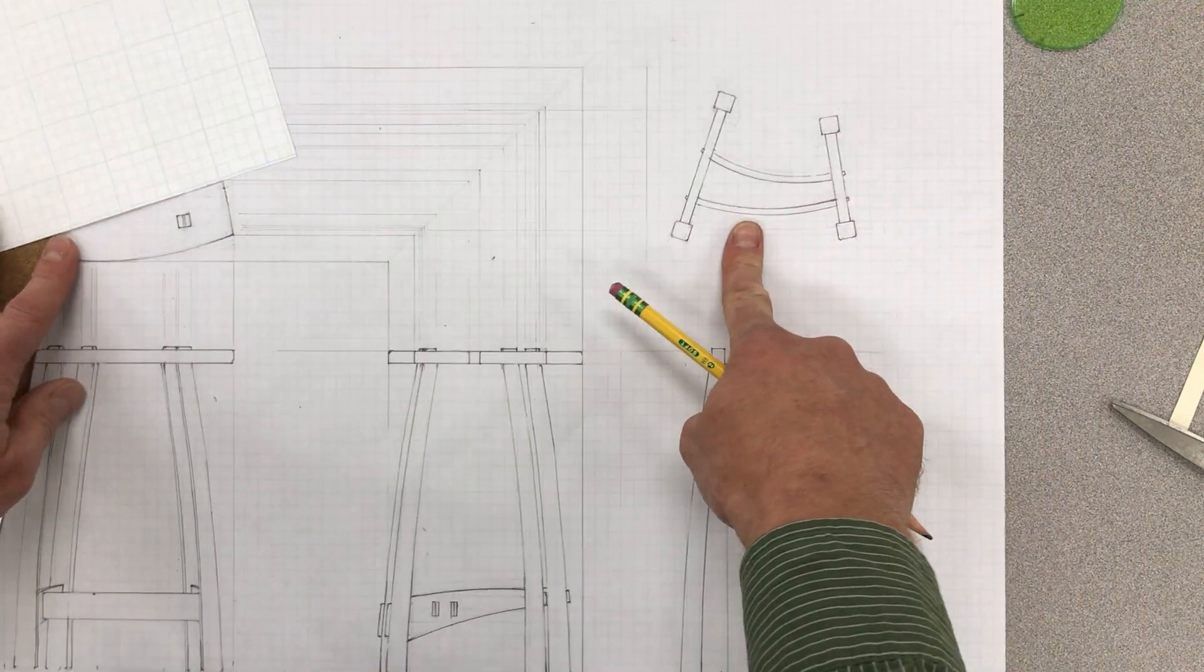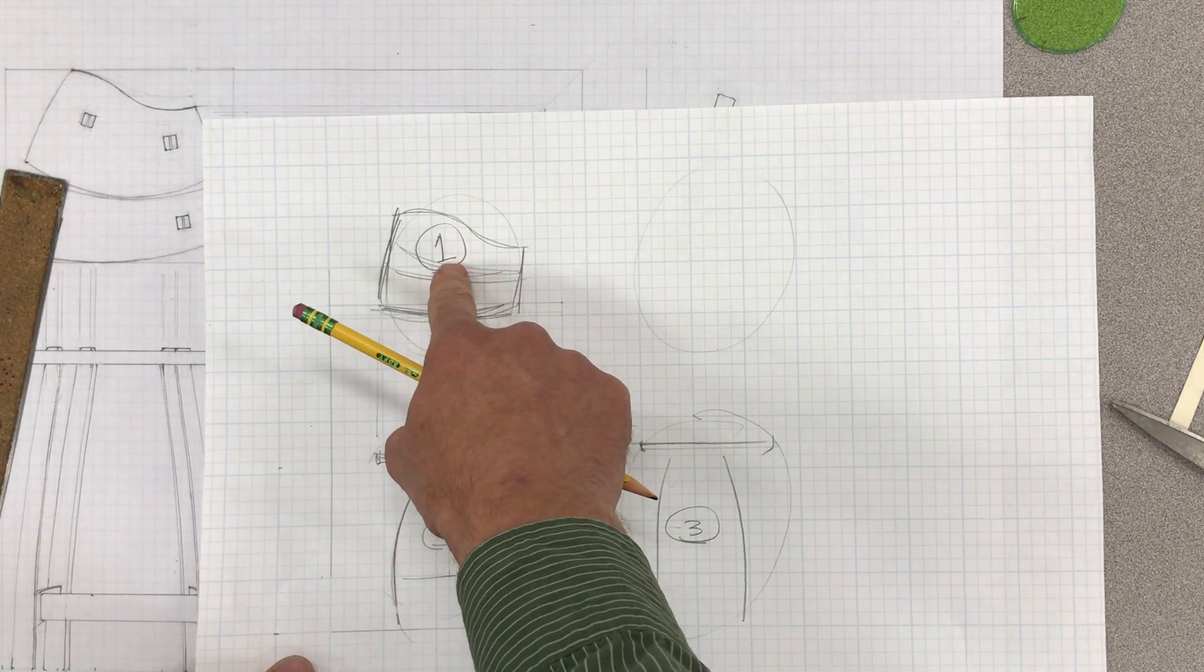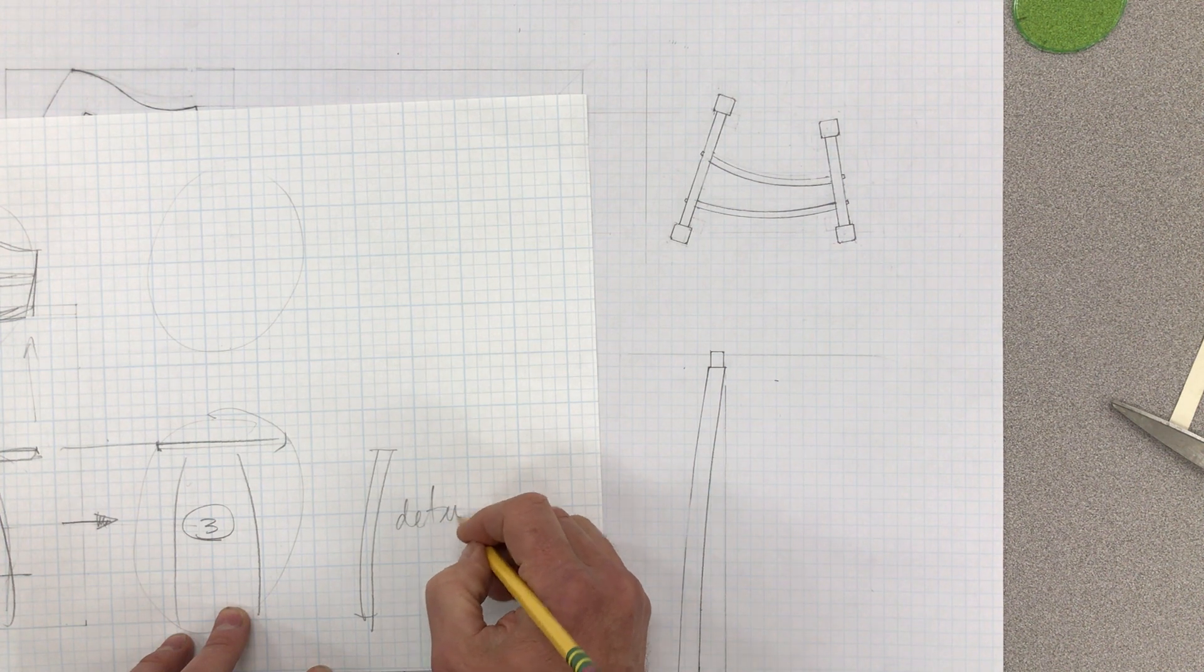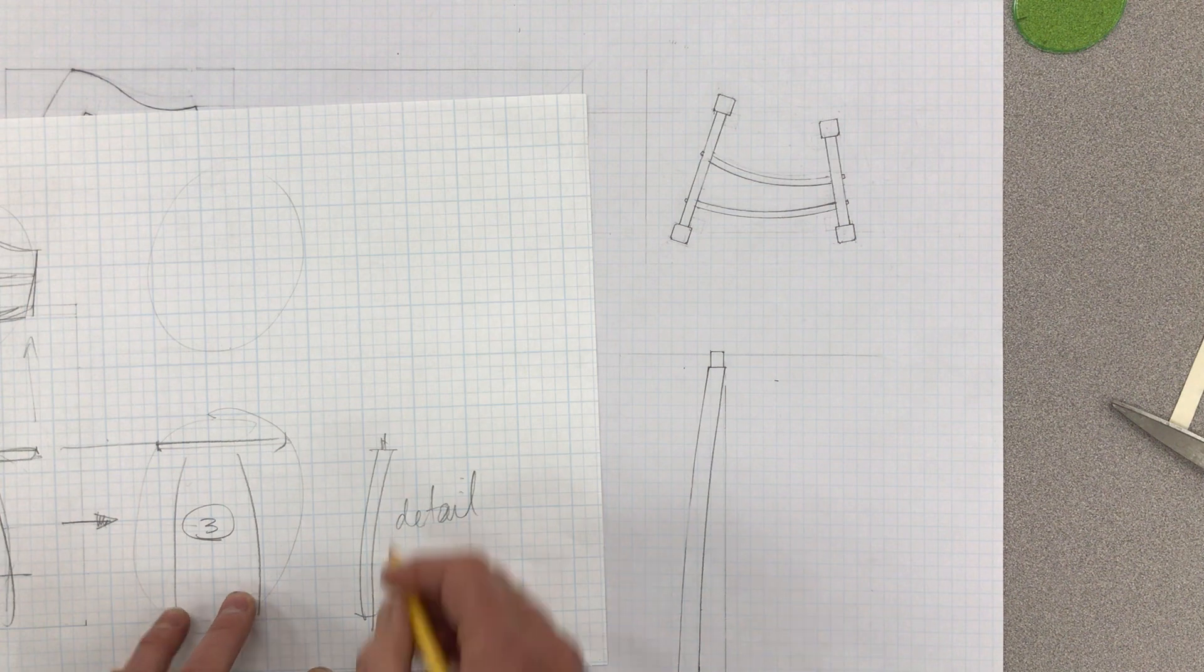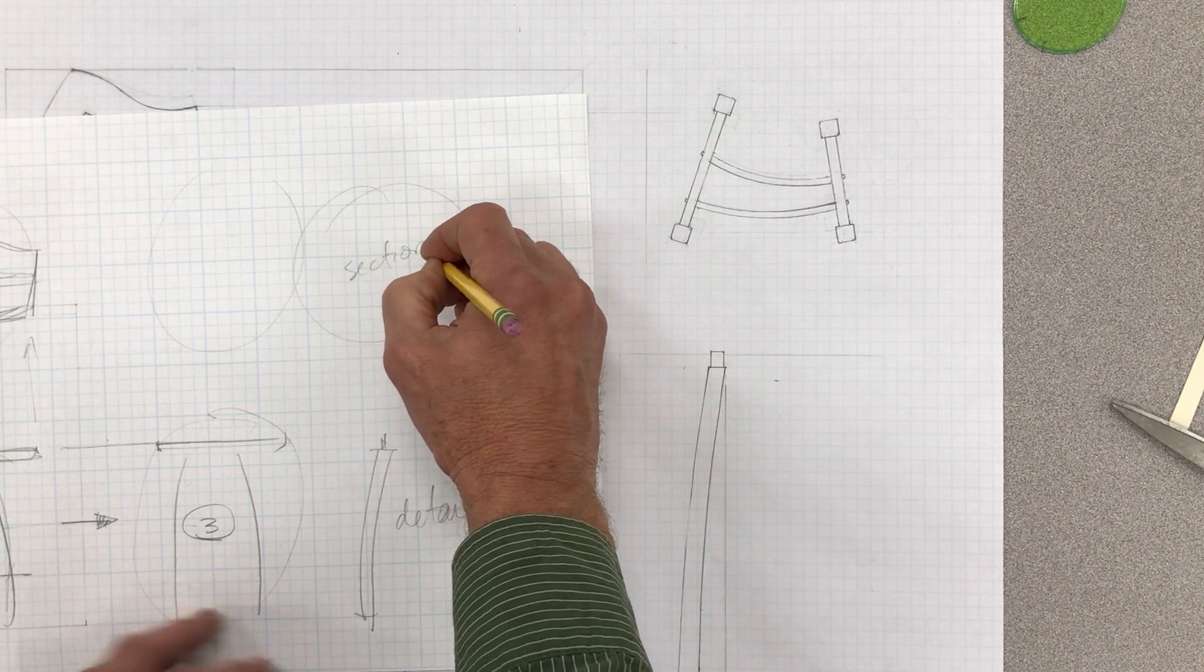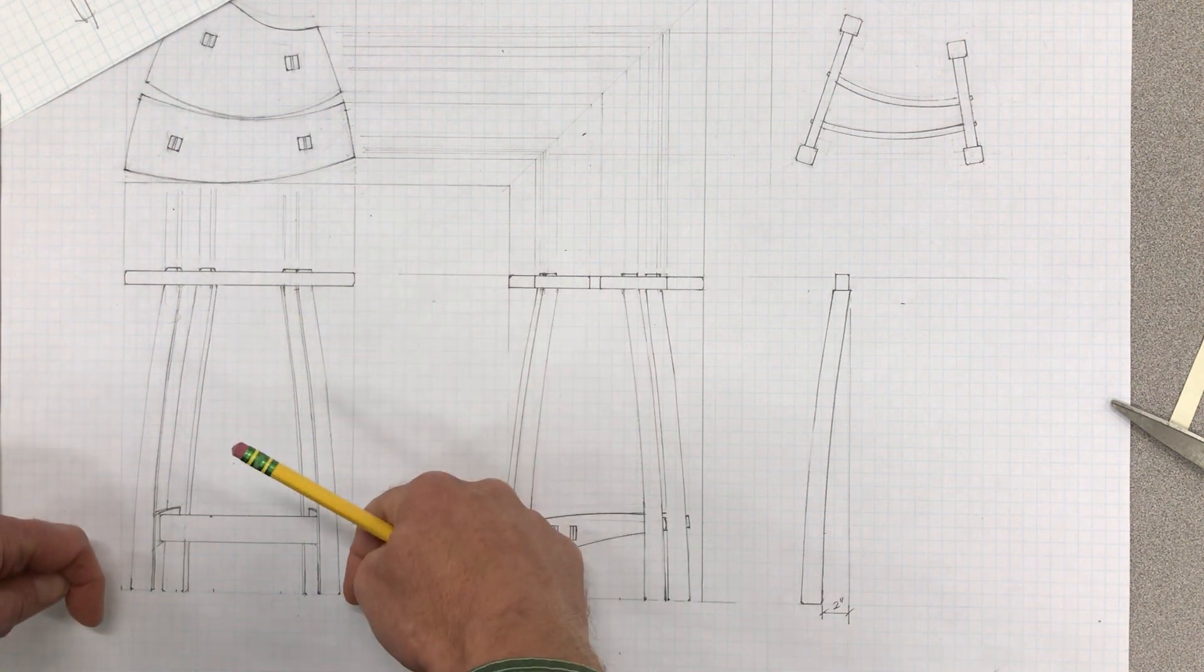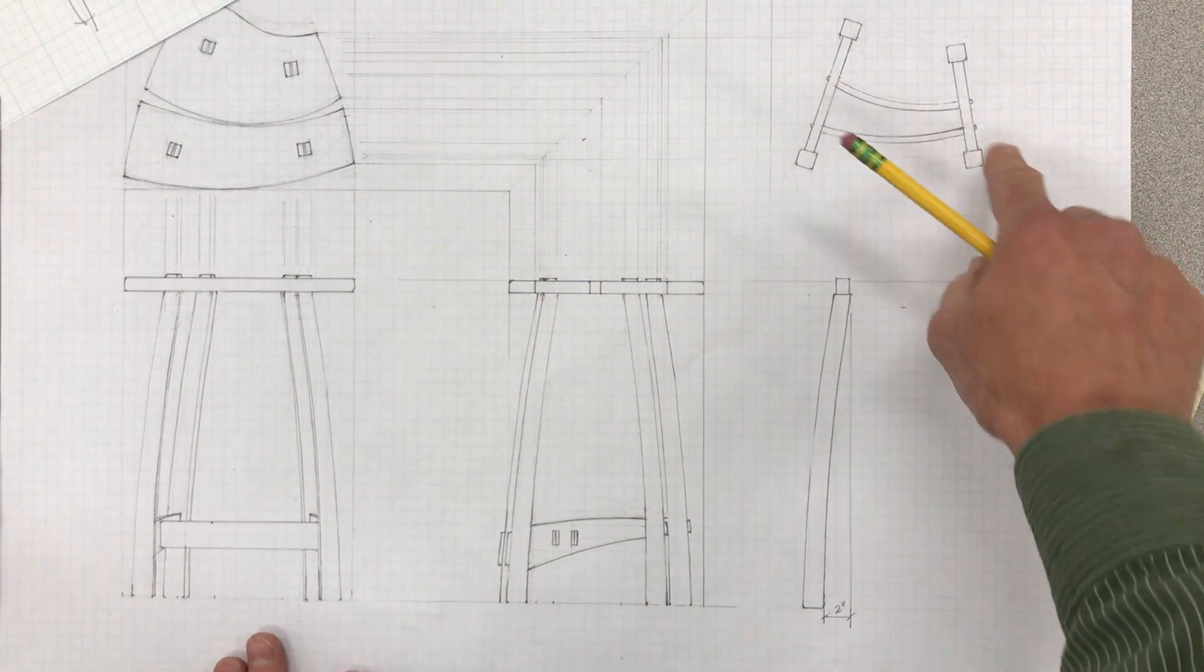Let's talk about the section drawing. Here we have our layouts—start there, go to there, go to there. Here I want to do a detail of the leg, and then here I'm going to put a section drawing. That section drawing is cutting off the leg right there and looking down—this is what it's going to look like—and I can see the curve of those lower stretchers.